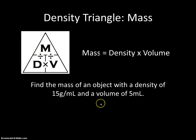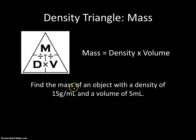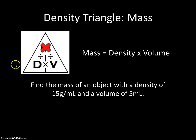Let's look at a new one: find the mass of an object with a density of 15 grams per milliliter and a volume of 5 milliliters. Any time we have units that are grams per milliliter — a mass per volume — we know that is a measurement of density. We know volume is 5 milliliters. We do not have the mass, so we're going to cover that up in our triangle. We're crossing the vertical line, so we're multiplying — mass equals density times volume.